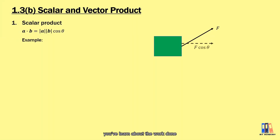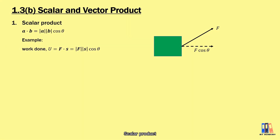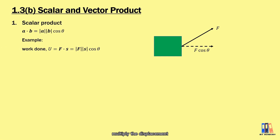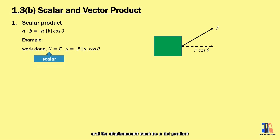For example, we have learned about work, which is the product of force and displacement. The scalar product considers the parallel component of the force multiplied by the displacement, which gives the cosine theta term in the formula. As we already know, work or energy is a scalar, so the product between force and displacement must be a dot product.